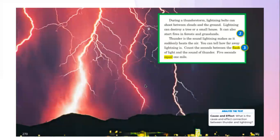During a thunderstorm, lightning bolts can shoot between clouds and the ground. Lightning can destroy a tree or a small house. It can also start fires in forests and grasslands. Thunder is the sound lightning makes as it suddenly heats the air. You can tell how far away lightning is. Count the seconds between the flash of light and the sound of thunder. Five seconds equal one mile.